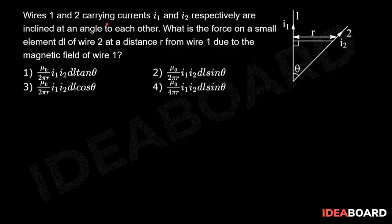Wires 1 and 2 carrying currents I1 and I2 respectively are inclined at an angle to each other. What is the force on a small element dl of wire 2 at a distance r from wire 1 due to the magnetic field of wire 1?